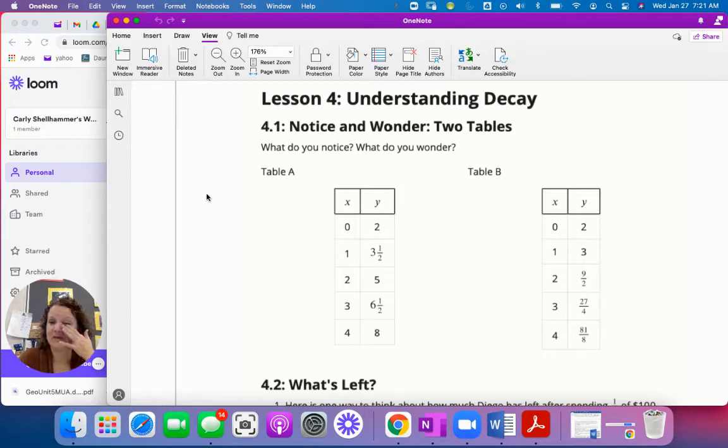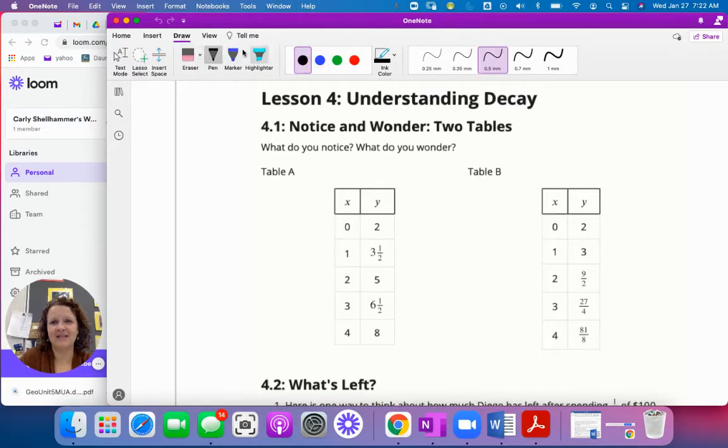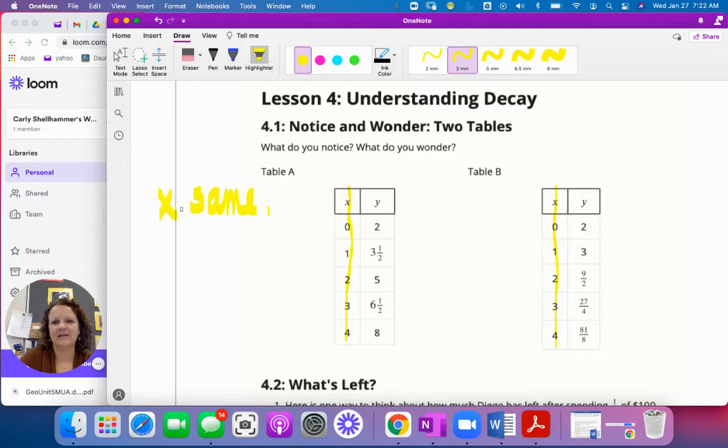Understanding decay. So notice and wonder. We have two tables. What do you notice? What do you wonder? Like normal, these are the ones I love doing in class because it's just a great discussion. Let me turn on my highlighter. I notice that the x values in each table are the same. Alright, definitely notice that. So the x values, and we can review last unit, those are our inputs, that is our domain. And they are the same for each value.